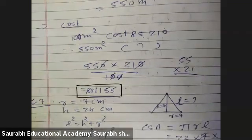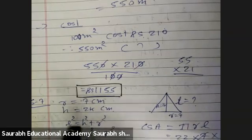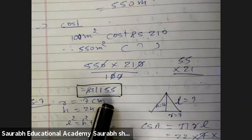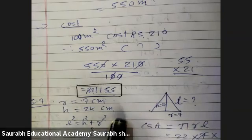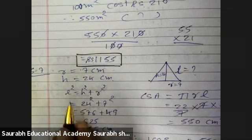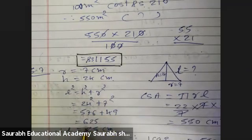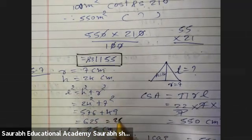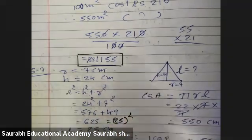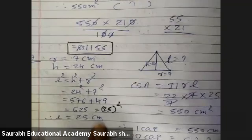Question number 7: A joker's cap is in the form of a right circular cone of base radius 7 centimeter and height 24 centimeter. Using Pythagoras, L squared equals H squared plus R squared: 24 squared plus 7 squared equals 576 plus 49 equals 625, which is 25 squared. Therefore slant height L equals 25 centimeter.